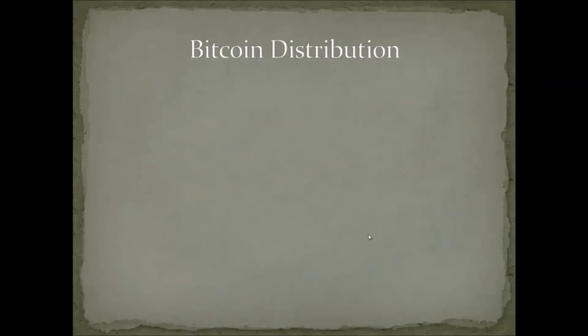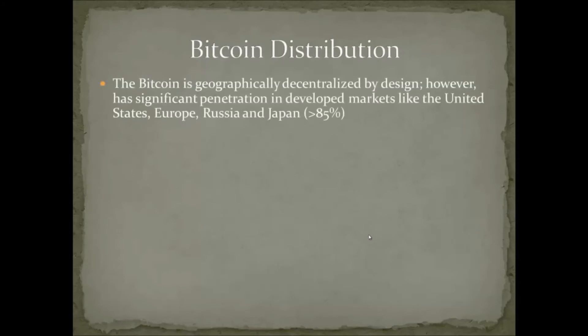So, Bitcoin distribution. How is Bitcoin geographically distributed? It's geographically decentralized by design. Bitcoin holds no flag — there's not an American flag or a Japanese flag on it. It's a decentralized peer-to-peer currency with no notion of a nation state or controlling interest.